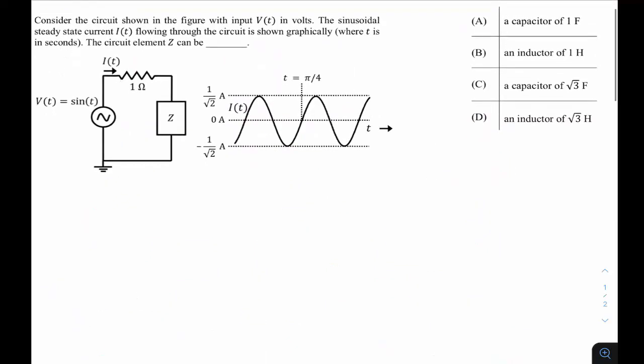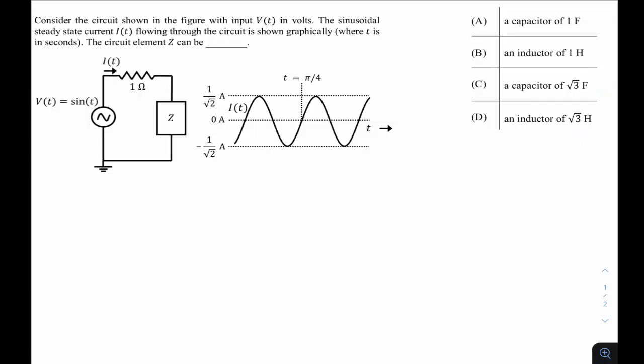The next question from GATE 22 ECE, network subjects, AC circuit topic: consider the circuit with input v(t) in volts. The sinusoidal steady-state current i(t) flowing through the circuit is shown graphically (t in seconds). The second element Z can be which of: capacitor 1F, inductor 1H, capacitor √3 F, or inductor √3 H? We need to identify the nature and value of Z.